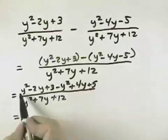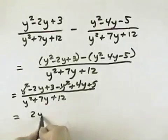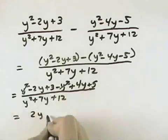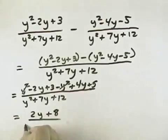Simplifying that, the y² terms, one positive and one negative, combine to be 0. Negative 2y plus 4y is 2y, and 3 plus 5 is 8. So we have 2y + 8 over our common denominator of y² + 7y + 12.